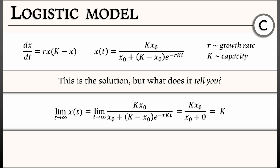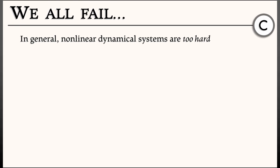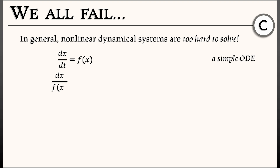That was a bit of work, and we did get some explicit results. This is about the best we can hope for — this is as good as it gets — and it's extremely rare, because in general we're not going to be able to use calculus to do this. Consider a really simple, general non-linear dynamical system: dx/dt equals f(x). We could try doing the same thing: separate variables, divide through by f(x), multiply by dt, and get dx over f(x) equals dt.